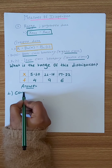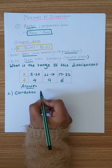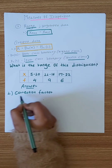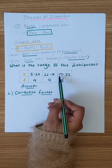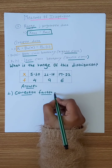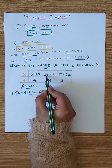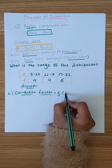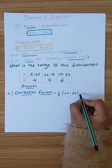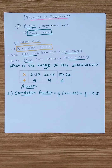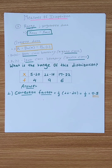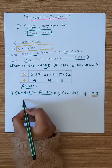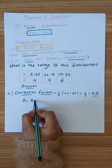The correction factor is 1 over 2 of the upper class limit minus the lower class limit of the subsequent class. This applies to the first and second class. The result is 1 over 2 of the lower class limit difference. This is the correction factor.